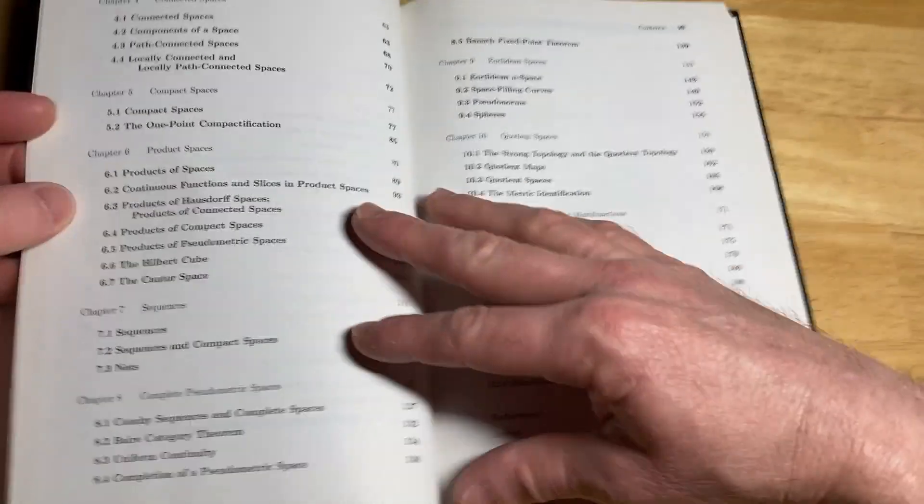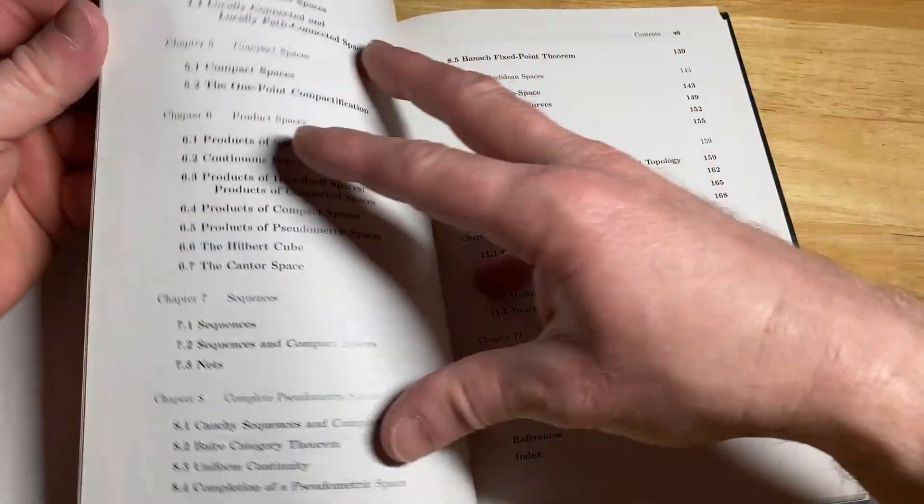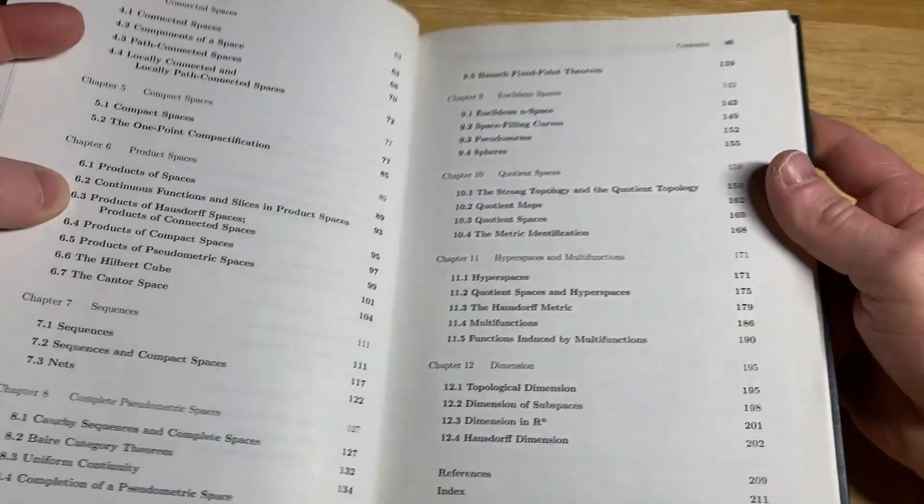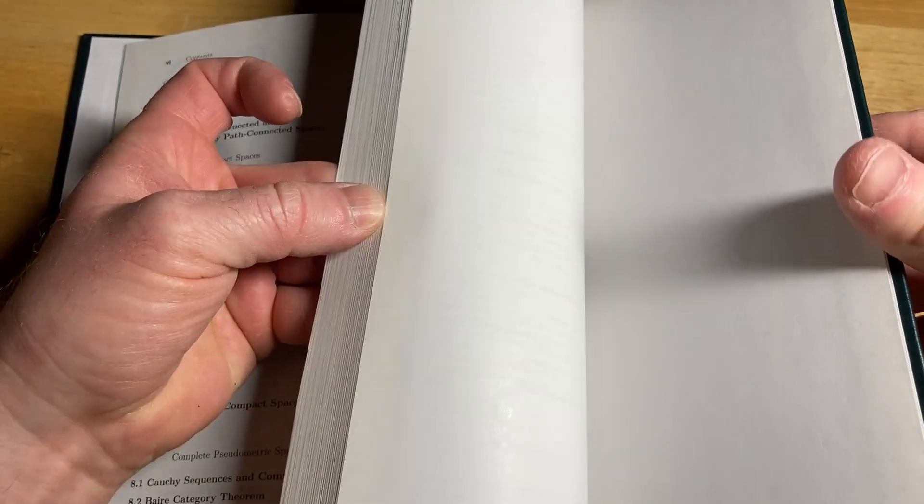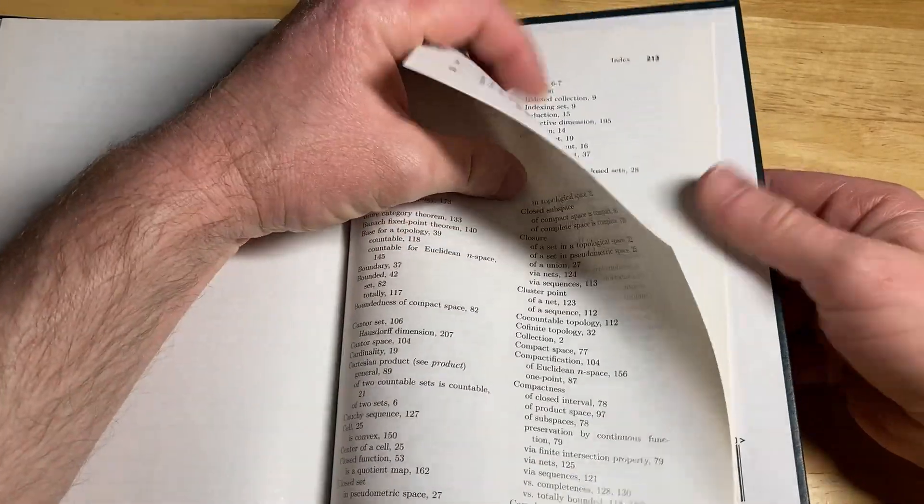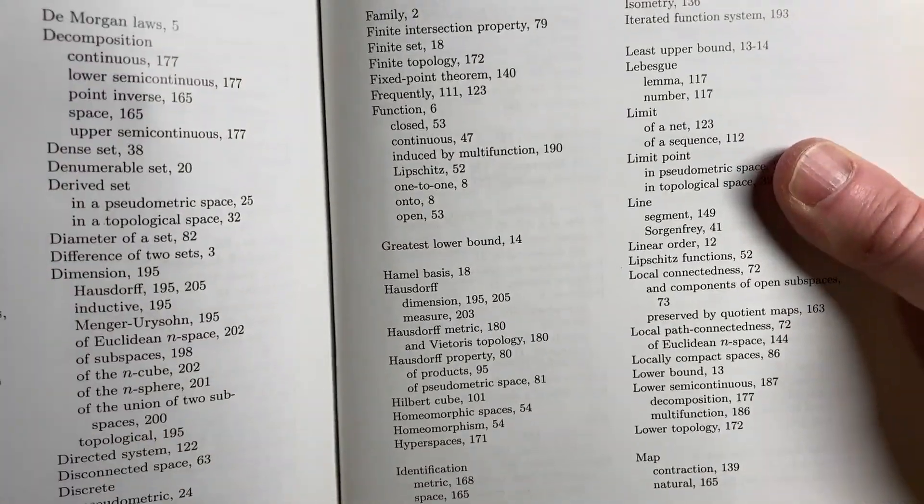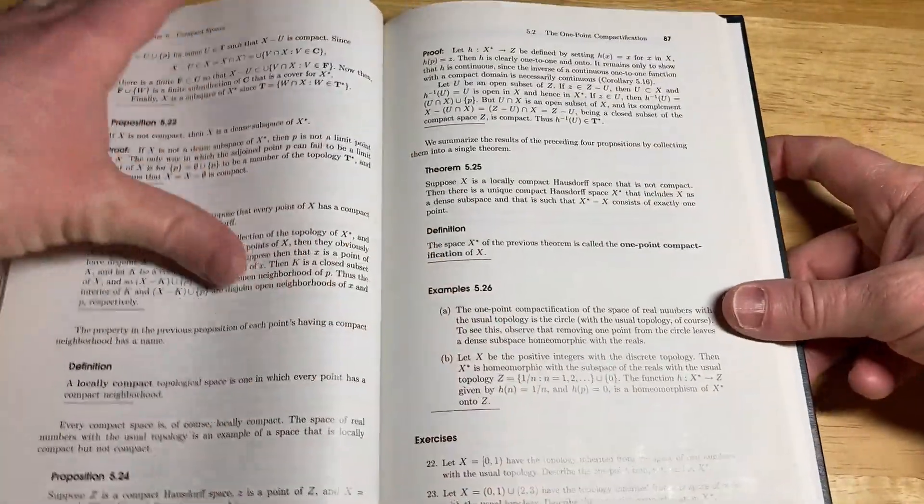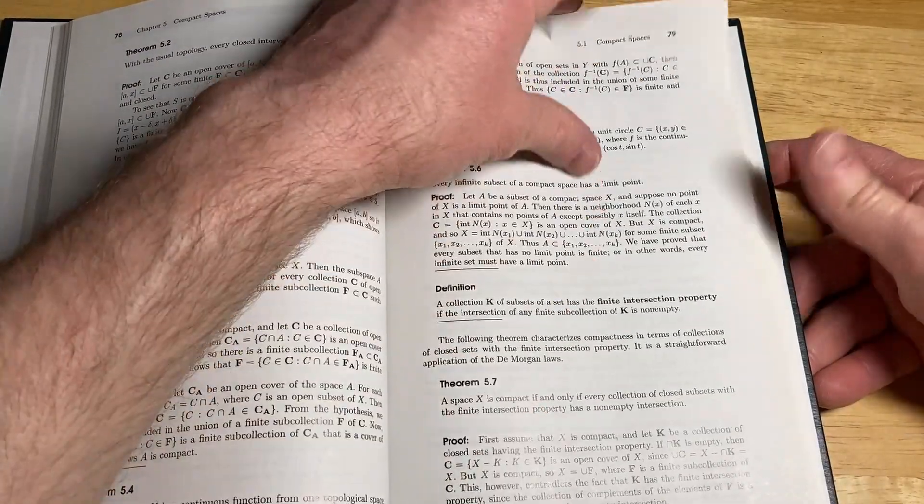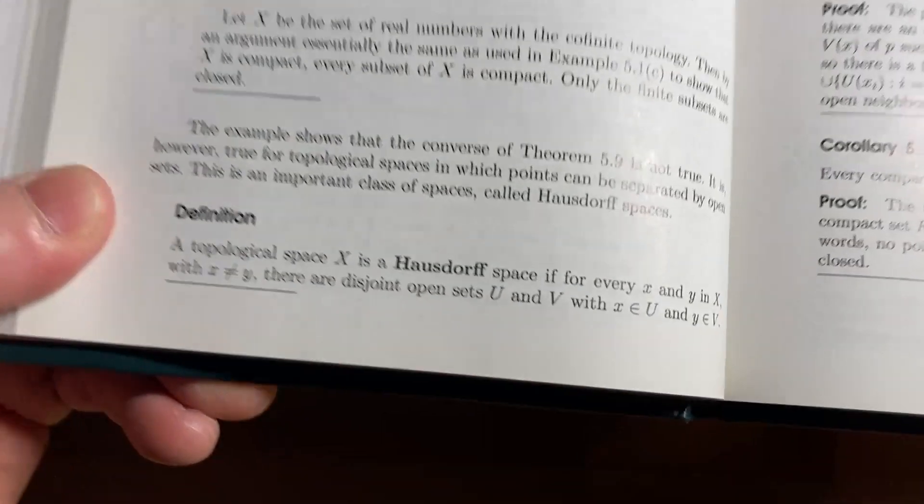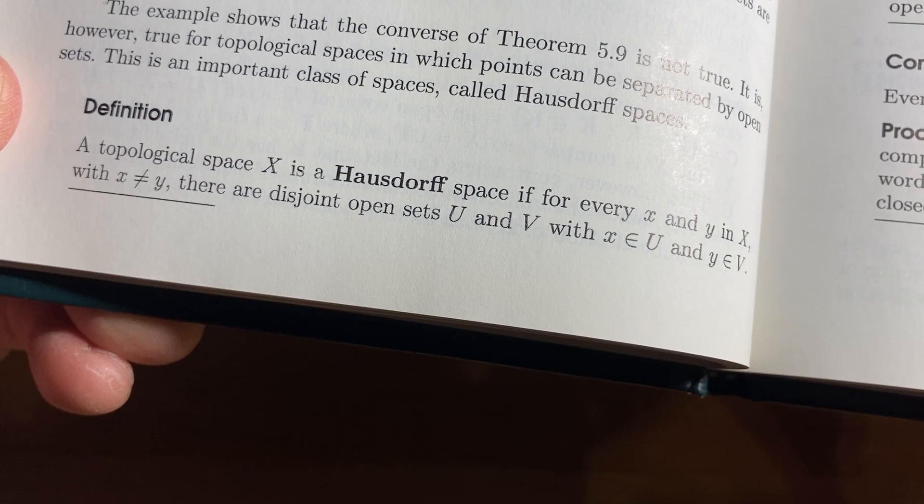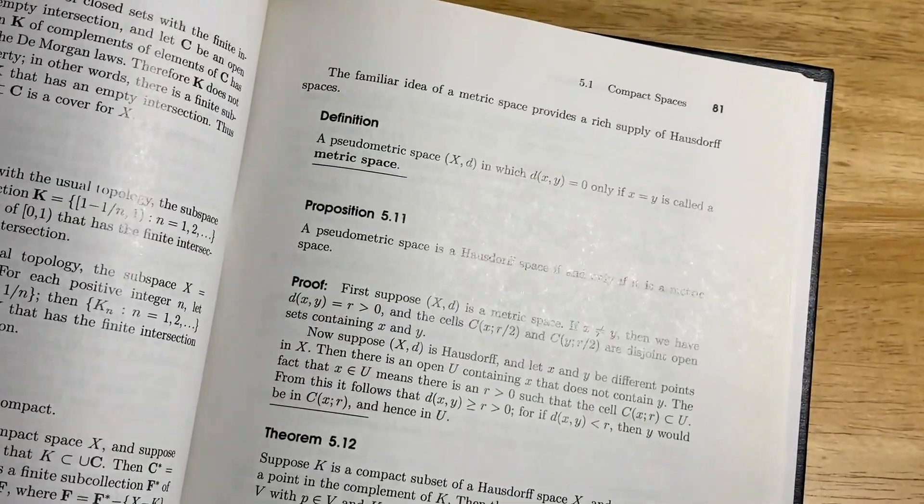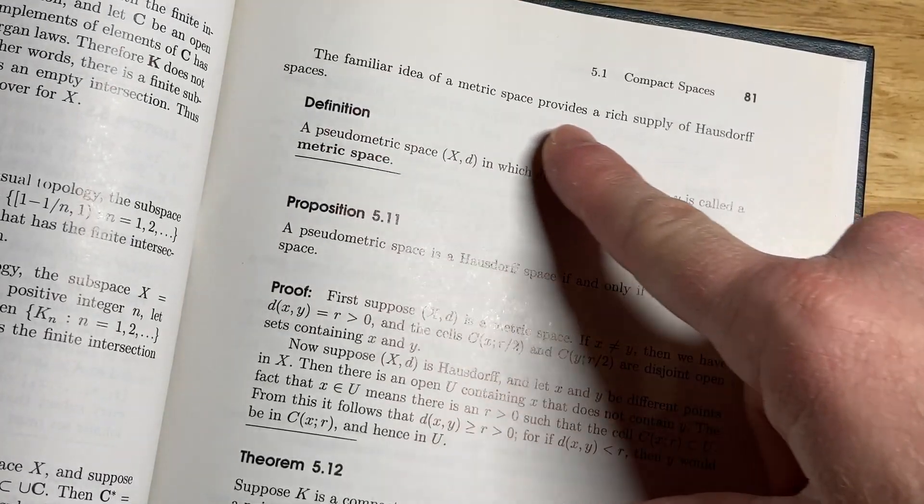So let's just jump in. Let's go to Hausdorff spaces. Let's look in the index. It should be somewhere in the beginning. We can take a look so you can see what that is. It's actually pretty simple. Hausdorff property. Page 80. Let's go there. We call it the Hausdorff property in this book, which is a good thing to call it. It makes sense. I was able to find it by looking in the index. A topological space X is a Hausdorff space if for every X and Y in X with X not equal to Y, there are disjoint open sets U and V, with X in U and Y in V.